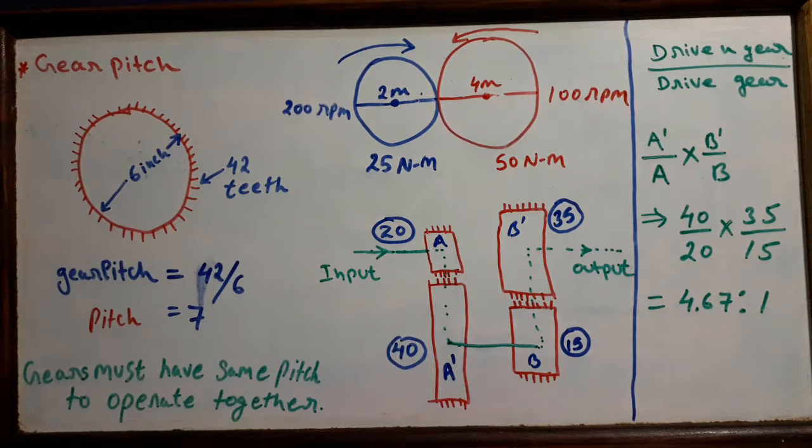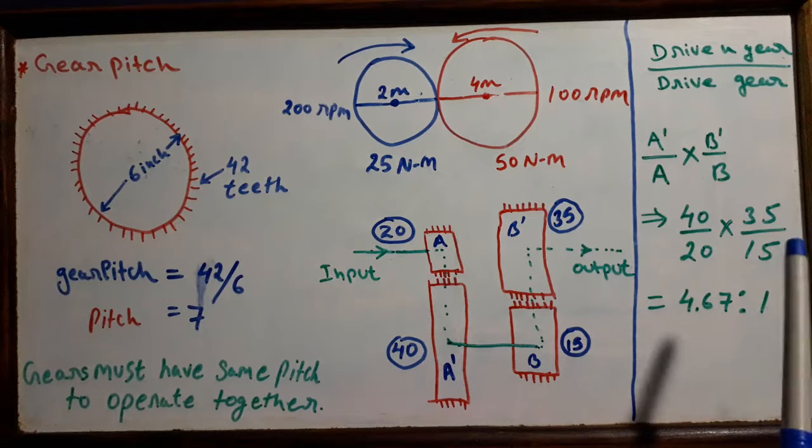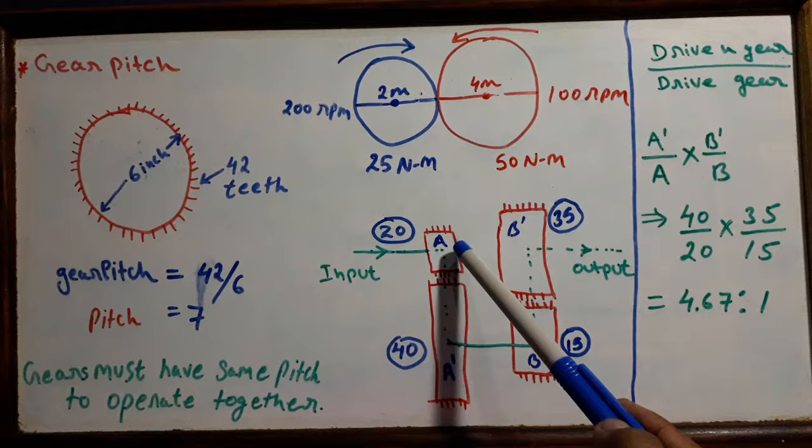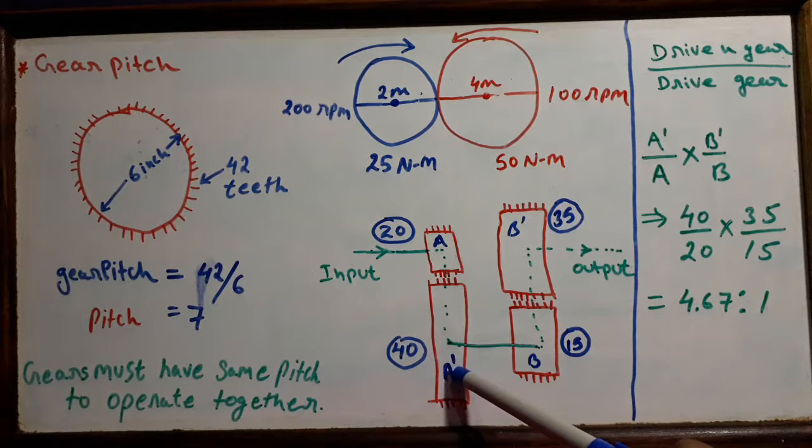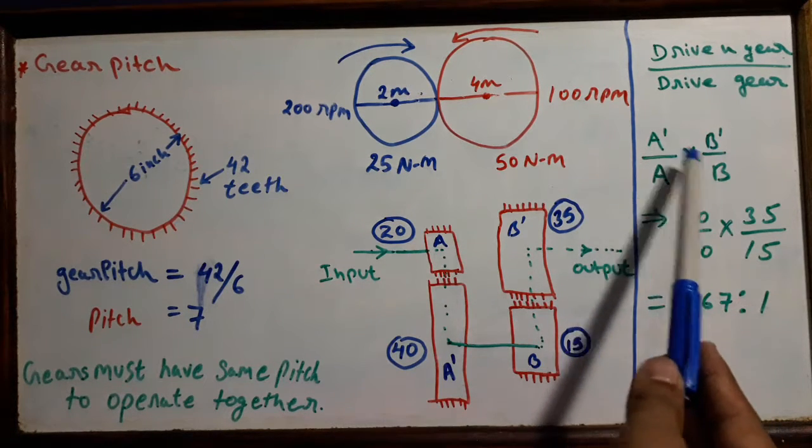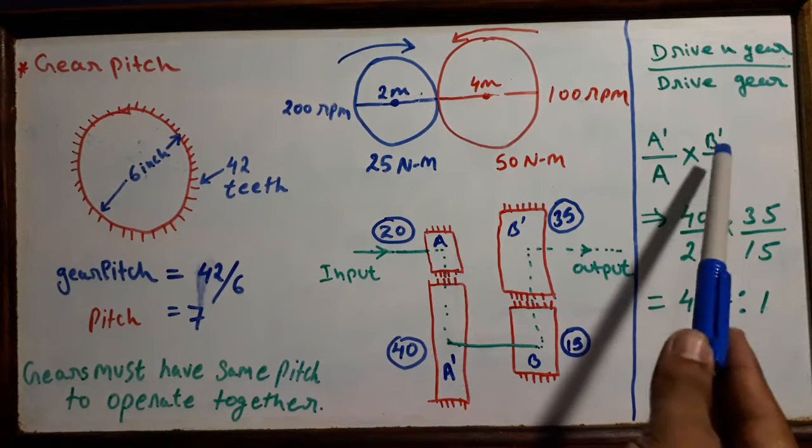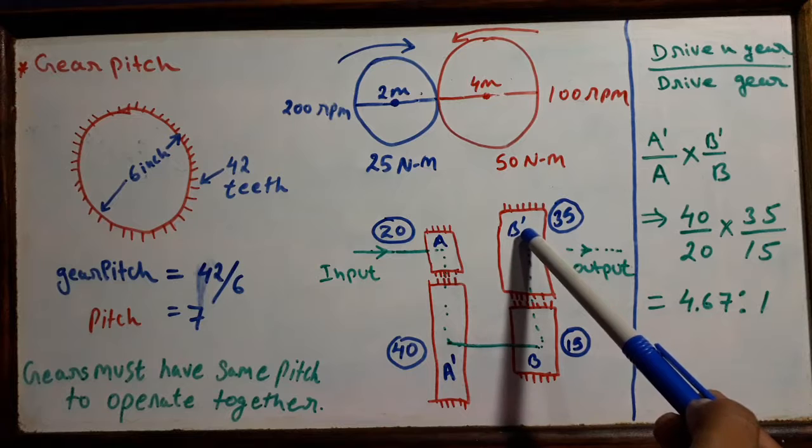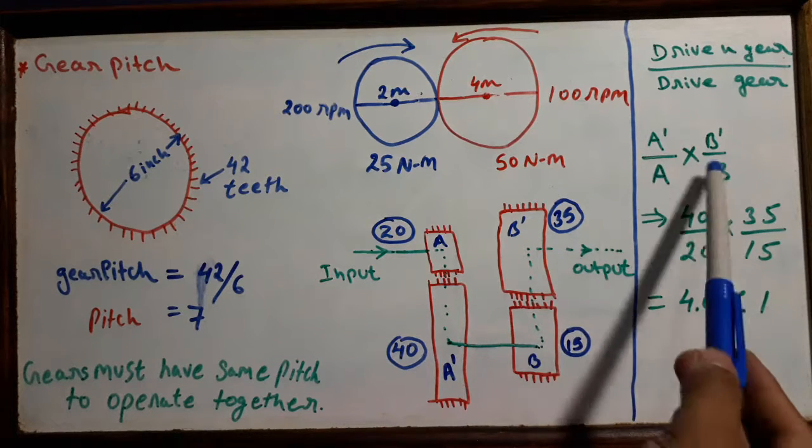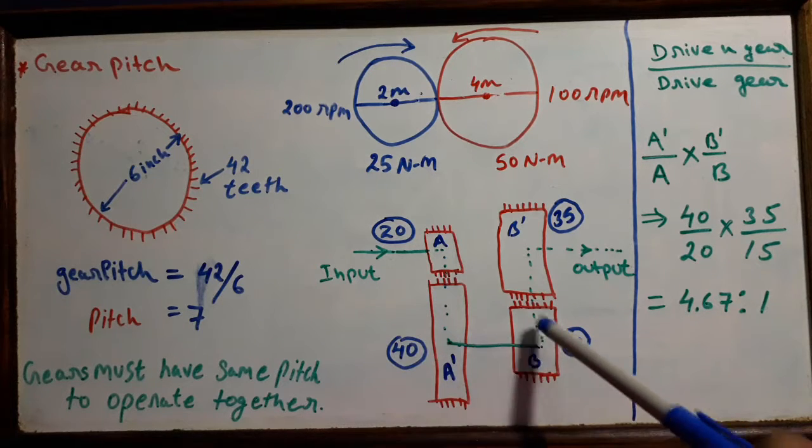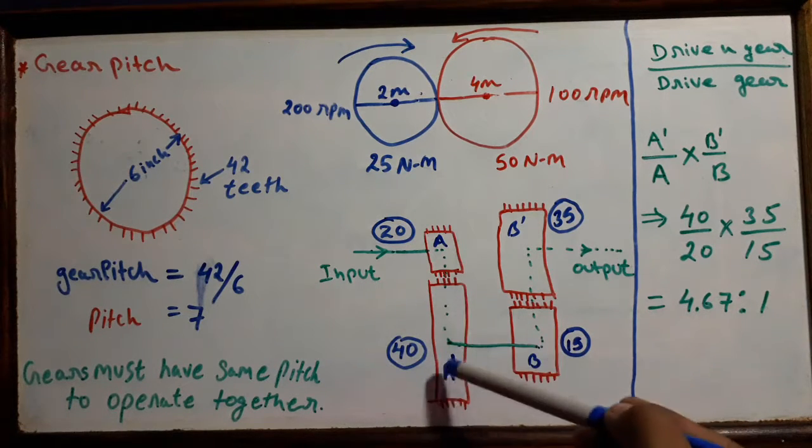To calculate the gear ratio, we have to divide the number of teeth of the driven gear by the drive gear. In the first case, we have driven gear A dash and drive gear A. A dash divided by A, and we are multiplying B dash by B because B dash is driven gear and B is drive gear. We are multiplying because these are connected in series, so gear ratios are also multiplied.